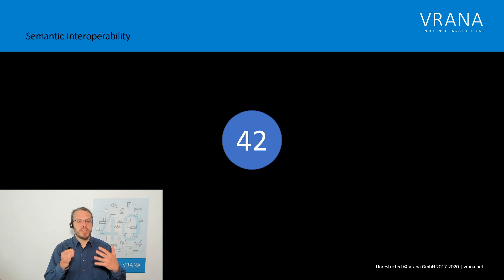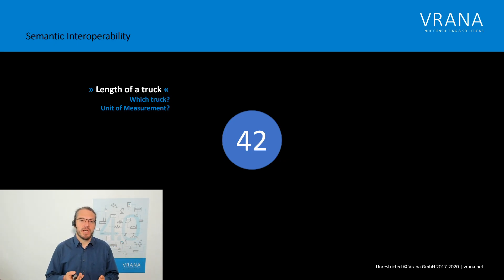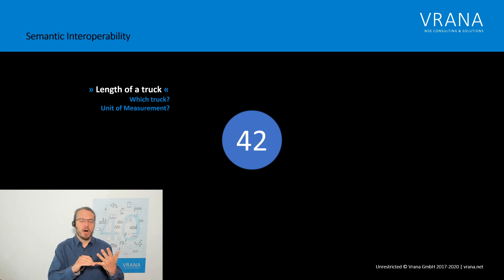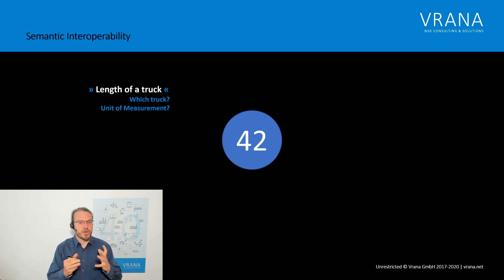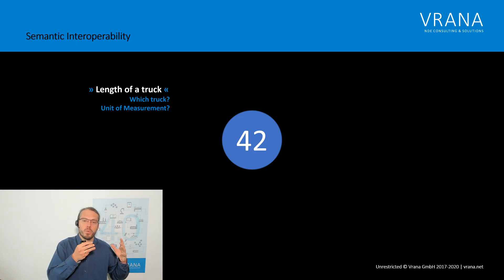That's exactly what semantic interoperability is about. Let's look at an example: the number 42. What can it mean? It could be the length of a truck — but then comes the question, which truck? You can answer: it's a truck from a certain manufacturer, produced in 2013 on the 2nd of February at 12 o'clock, used in the USA, running for 200,000 miles up to that moment, and the length is in meters, not in feet or inches. So for a computer to understand this number, we need to give it all the connections to the item it is attached to.